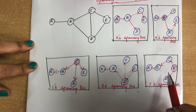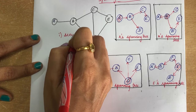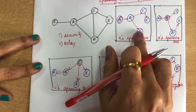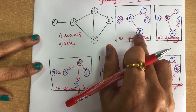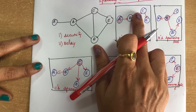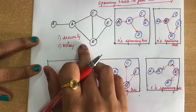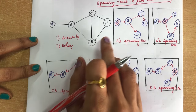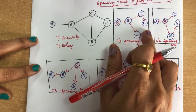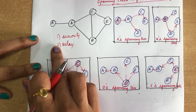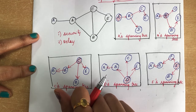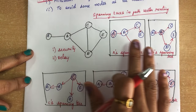These spanning trees are constructed this way because of security reasons or because of delay. For example, if you think there will be a delay when passing a packet between D and E, you can avoid that route and pass through some other route. So because of any policies — security policy or delay — you can choose whatever path you want to pass the packets through. This is all about the spanning trees.